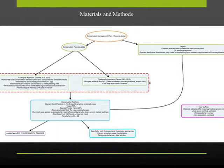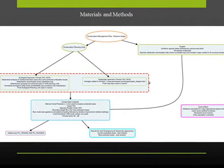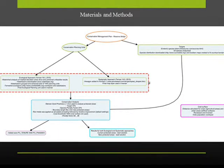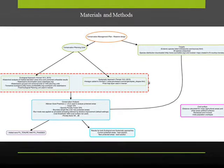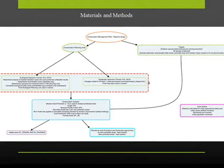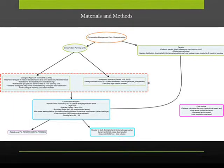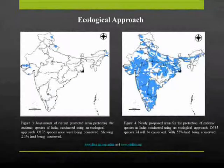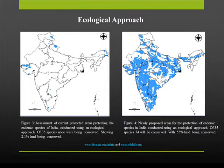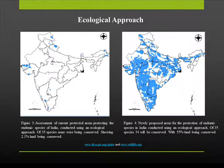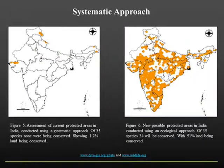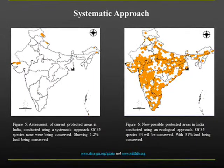A boundary length of 2 was indicated and a cost surface with threshold cost was chosen as 1,600. A systematic approach was conducted next where hexagons represented conservation planning units. Area threshold was conducted at 0.5 km² giving 696 planning units in total. Species targets and penalty factors were similar to that of the ecological approach; however, these results differed.